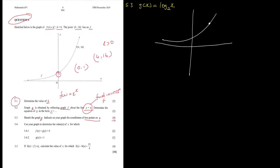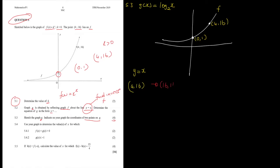Let's redraw the given graph. You have the point (4, 16) and the point (0, 1) on f(x). Since g is the reflection of f about y = x, you swap the coordinates of each point. The point (4, 16) on f translates to (16, 4) on g, and the point (0, 1) translates to (1, 0) on g. Also, the original graph has an asymptote y = 0, so the reflected graph g has an asymptote x = 0.